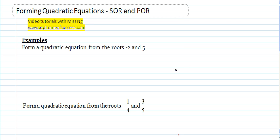So some of the example questions would be this, a simple one here: form a quadratic equation from the roots negative 2 and 5. So actually there are two methods to solve this question. I'm going to teach you the easy one first.